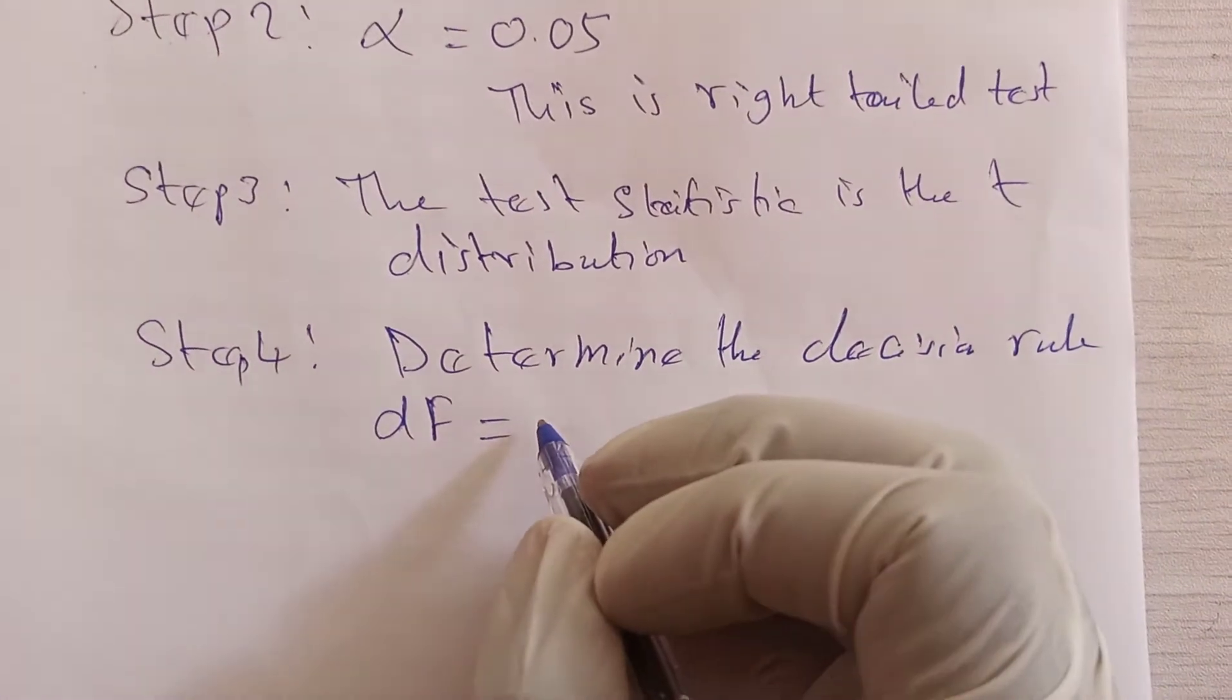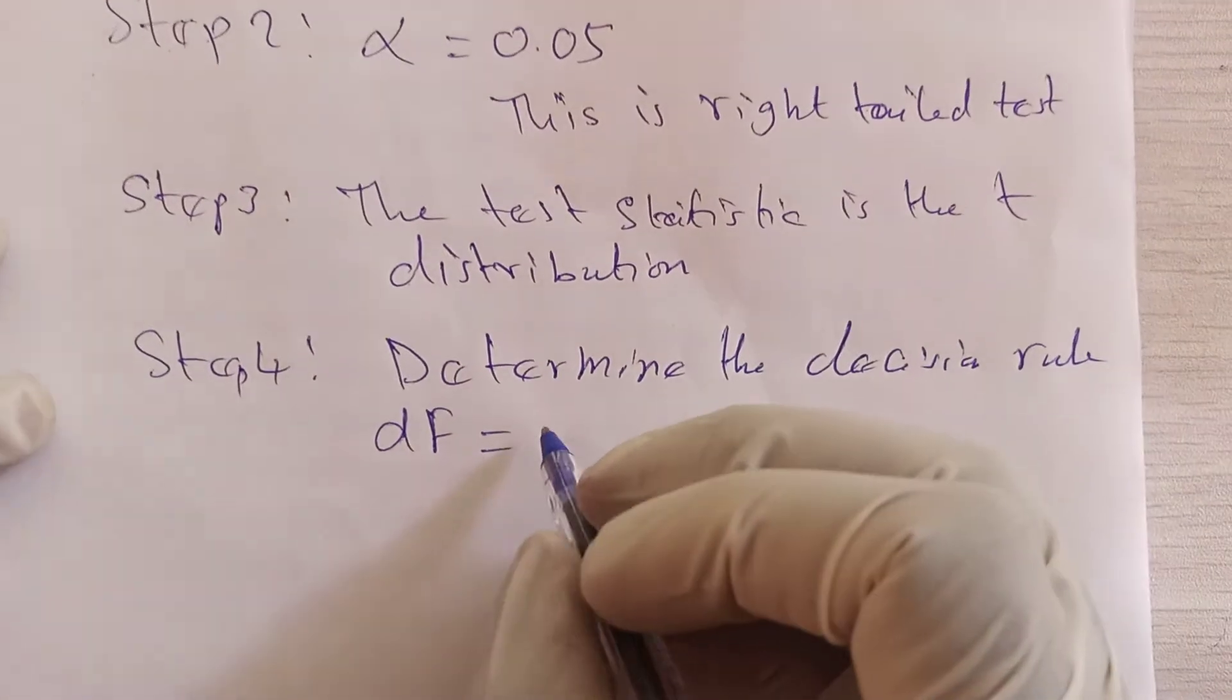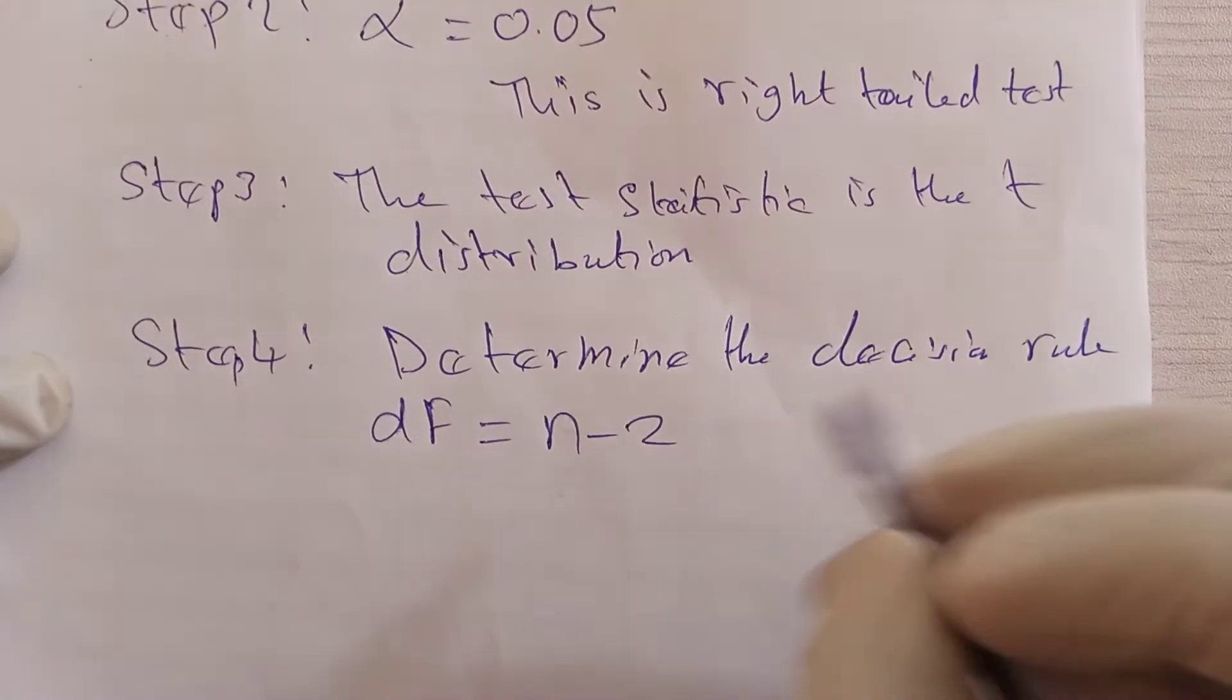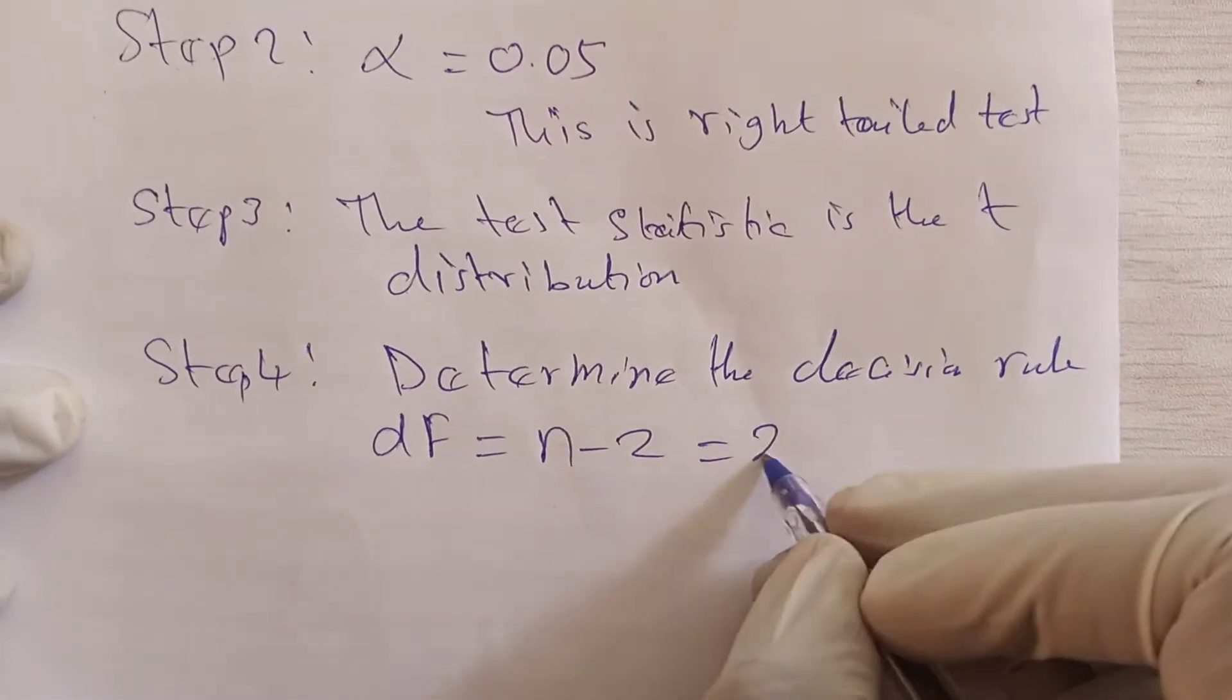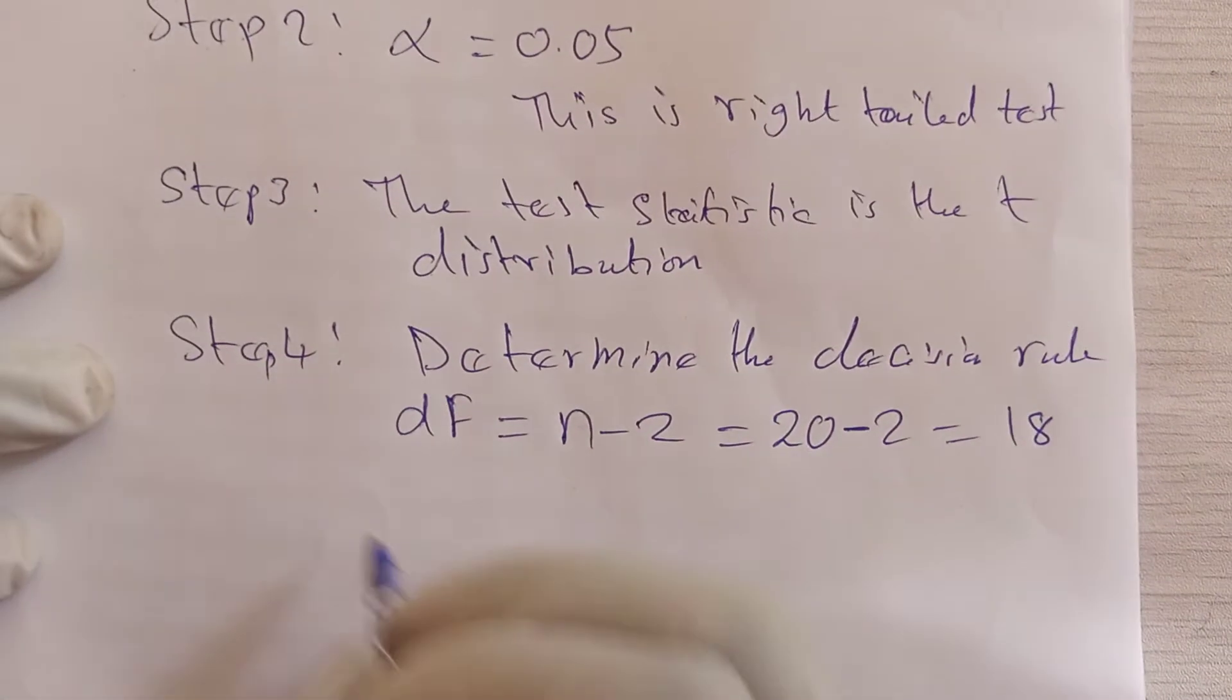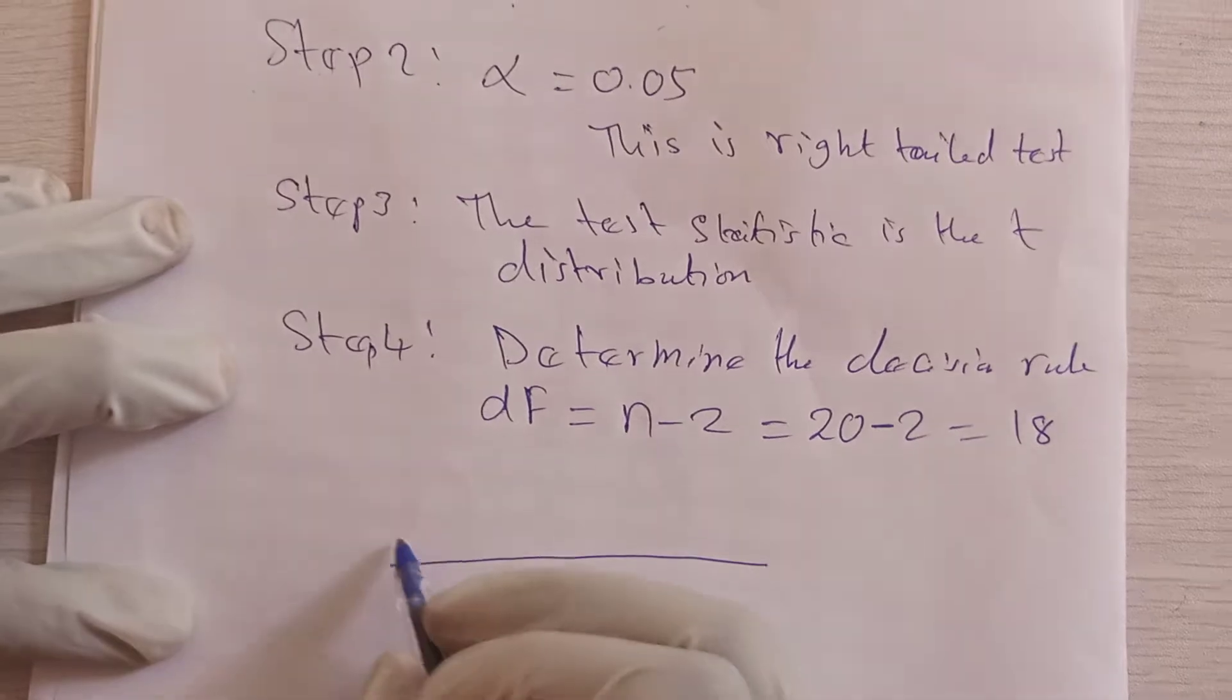In this topic, in this correlation of coefficient test for correlation of coefficients, the degree of freedom is n-2. So our n is 20, that's the sample size, minus 2. It gives you what? 18.